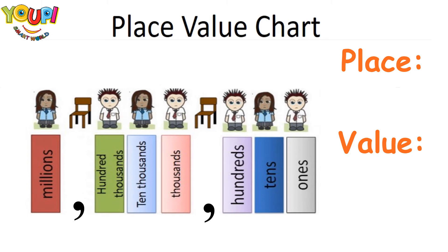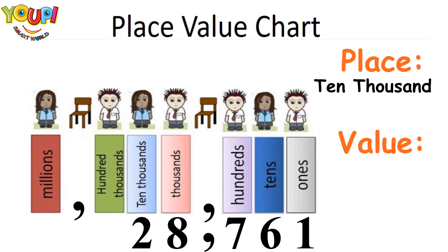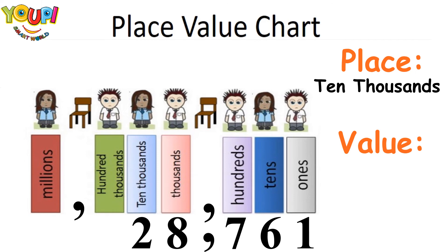For example, in this number, what is the place of 2? The digit 2 is in the 10,000 place. Now, what is the value of this digit? It's 2 times 10,000, so 2 times 10,000 is 20,000. So the place of digit 2 is 10,000, but the value of digit 2 is 20,000.